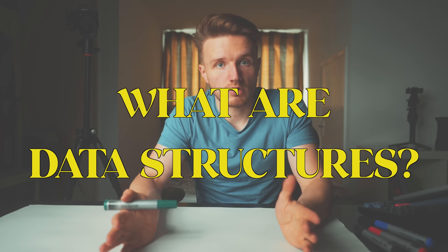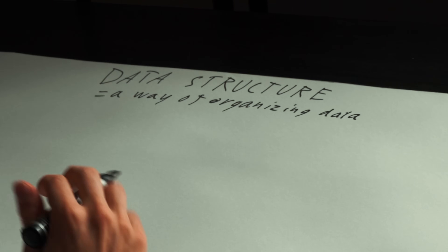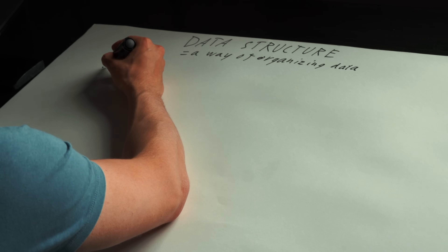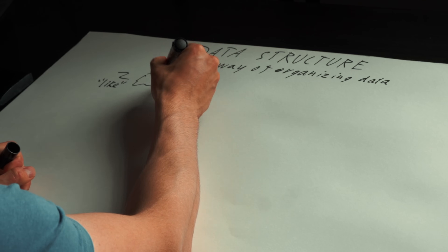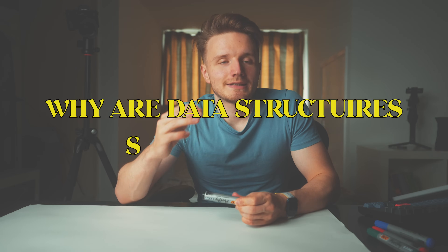So what are data structures? At an extremely high level, all a data structure is, is a way of organizing data. Whenever you're writing a program, the purpose why computers exist in the first place is that we have some data — which can be numbers or maybe a string — and then we have something that we want to do with that data to produce some useful result. It turns out that it really matters how we actually organize data in a computer's memory. I have organized a couple of very specific examples which will allow you to actually understand it in the dumbest way possible.